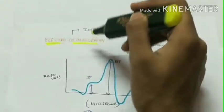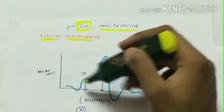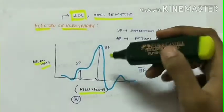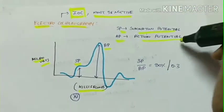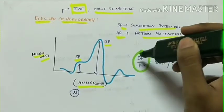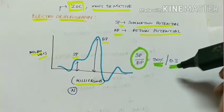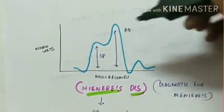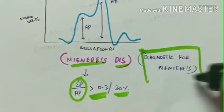The next investigation is electrocochleography which is the investigation of choice and the most sensitive test. Here a graph is plotted with the y-axis being microvolts and x-axis being the time in milliseconds. There are two potentials seen, SP and AP: SP is summation potential and AP is action potential. Normally the ratio between SP and AP is about 30 percent or 0.3. Whereas in Meniere's disease the summation potential increases whereas the action potential remains the same. Therefore the SP by AP ratio becomes more than 3 or more than 30 percent, which is diagnostic for Meniere's disease.